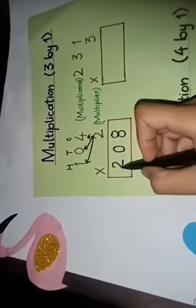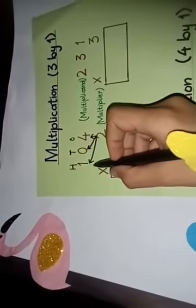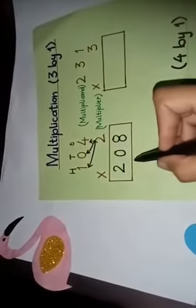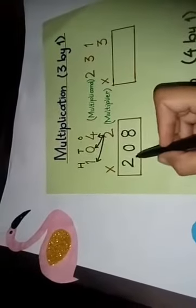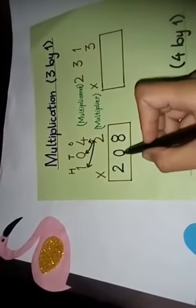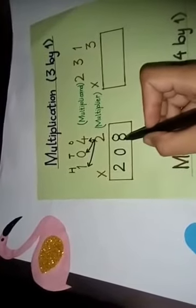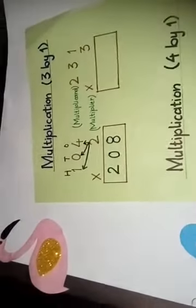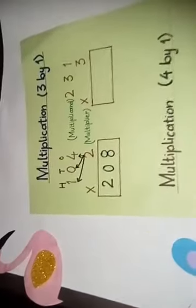Kiyoho same hai? Kyunke ham ne number ko 1 se multiply kiya hai. So the answer is 208.